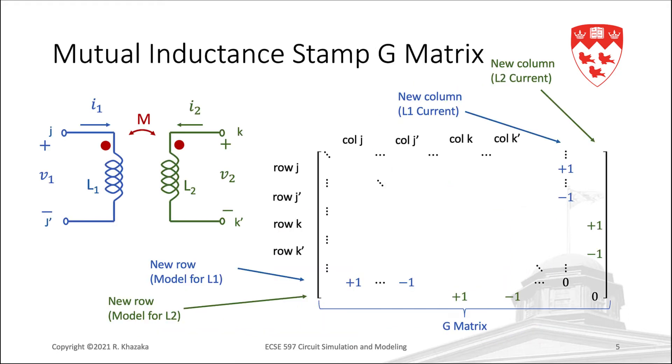Now we can generalize a stamp for two coupled inductors connected between nodes J, J' and K, K'. In the G matrix, we only have the regular inductor stamp for each inductor. Remember, the mutual inductance term M appears only in the C matrix. So we have a new row and a new column for L1, and a new row and new column for inductor L2.